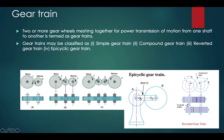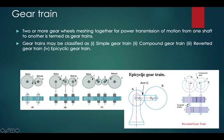An epicyclic or planetary gear train consists of three elements: gear A, gear B, and an arm C. If the arm is fixed, it is a simple gear train with gears A and B alone. But when the arm is also in motion, gear A and gear B rotate while gear B also revolves around gear A. Epicyclic gear trains are used where large speed reductions are required, with examples including differential gears, automobile gearboxes, and the back gear of a lathe.